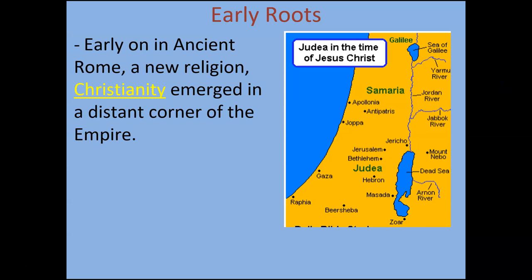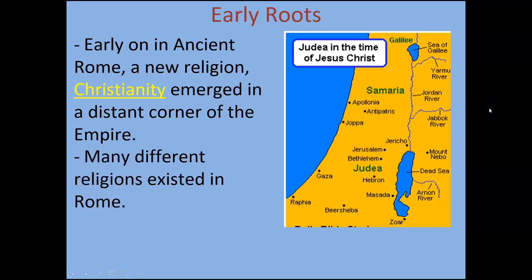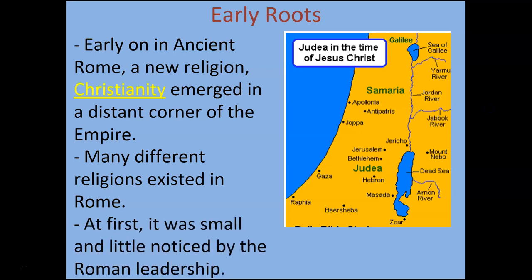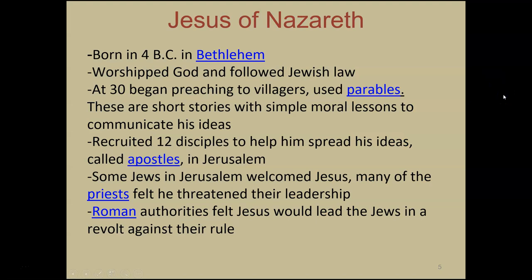In a nutshell, the early roots of Christianity: Christianity was a brand new religion about 2,000 years ago in Judea, which is in modern-day Israel. Many different religions existed in the Roman Empire at the time, Christianity being one of them, in a distant part of the empire. You can't talk about Christianity without talking about Jesus of Nazareth. He was born in 4 BC in Bethlehem. He worshiped God, followed Jewish law, and at age 30 began to preach to villagers using parables — short, simple stories with a moral lesson.